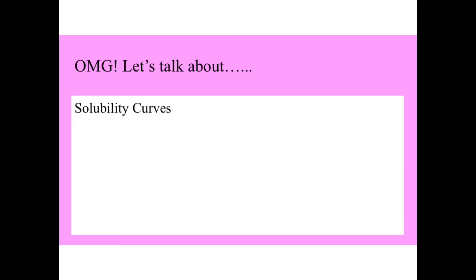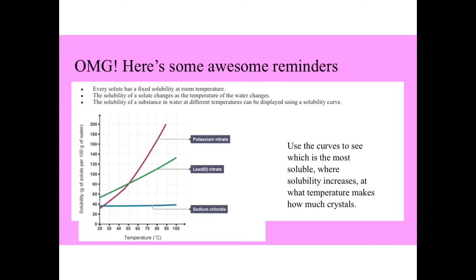Solubility curves. That's the other thing you have to do with solubility. Normally you have to plot the curves. So every solute has a fixed solubility at room temperature. The solubility of solutes changes as the temperature of water changes.